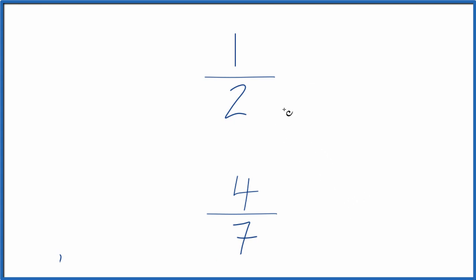What we need to do is find a common denominator, something that 2 and 7 will go into evenly. Then we could compare the numerators. So let's do this.